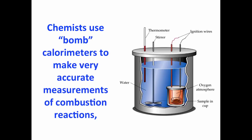Chemists can use something known as a bomb calorimeter to make very accurate measurements, typically of combustion reactions. We have, in a bomb calorimeter, a very beefy, thick-walled steel container. We put a sample of something we'd like to combust or burn inside of that, fill it with oxygen at a fairly high pressure.